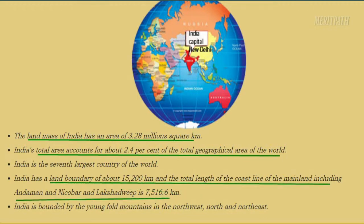India has a land boundary of 15,200 kilometers. The total length of the coastline of the mainland, including Andaman, Nicobar, and Lakshadweep, is 7,516.6 kilometers. India is bounded by the young fold mountains in the northwest, north, and northeast.